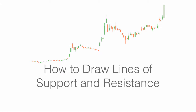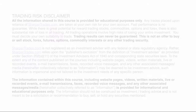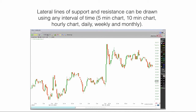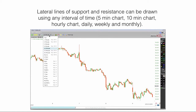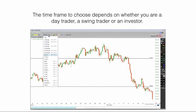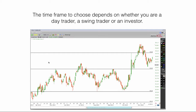How to draw lines of support and resistance. Lateral lines of support and resistance can be drawn using any interval of time: 5-minute chart, 10-minute chart, hourly chart, daily, weekly, and monthly chart. The time frame to choose depends on whether you are a day trader, a swing trader, or an investor.